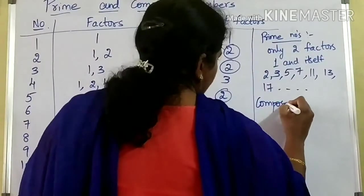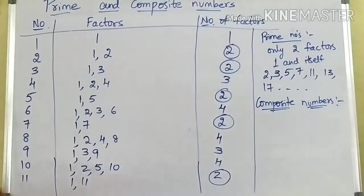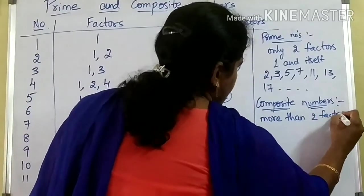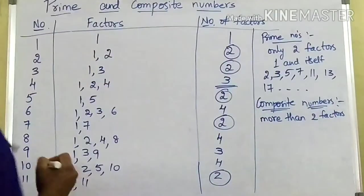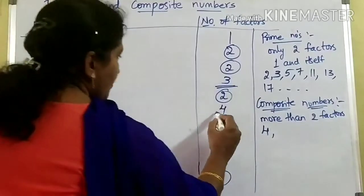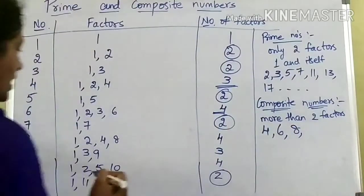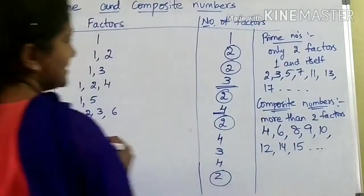So the definition of prime numbers is: numbers having only two factors — one and itself — are called prime numbers. Next, coming to composite numbers. Numbers having more than two factors — or in other words, the numbers which are not prime numbers — are called composite numbers. Here one cannot be composite because one is having only one factor. So the first composite number is four. Next composite numbers are six, eight, nine, ten, twelve, fourteen, fifteen — all these are composite numbers.